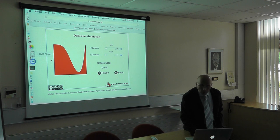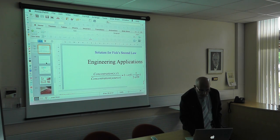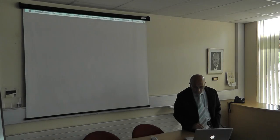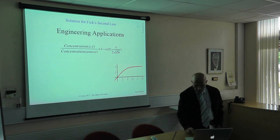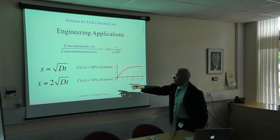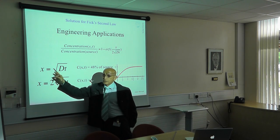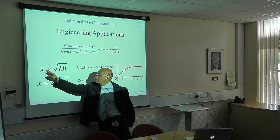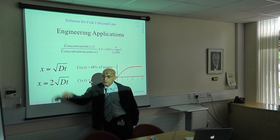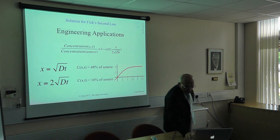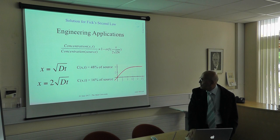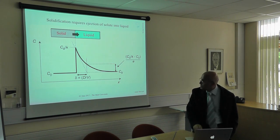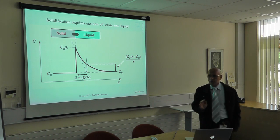If you don't want to remember anything about this talk, please remember at least this equation — it's very easy. Your distance of diffusion is proportional to √(D·t). It gives you what some places call the characteristic diffusion distance.